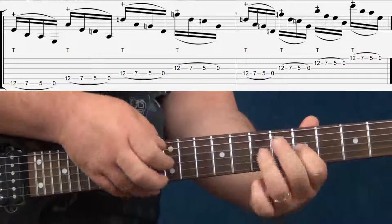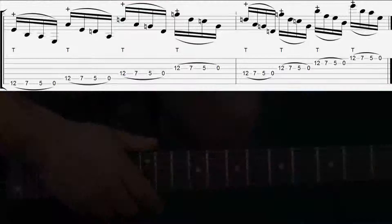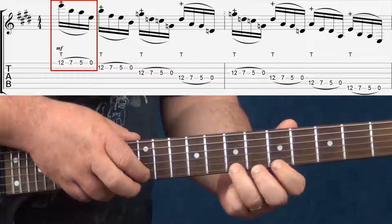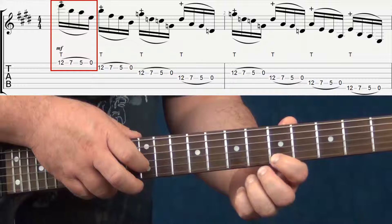Now we'll break it down measure by measure. Start off by placing your index finger on the 12th fret. Next, pull off to the 7th fret, pull off to the 5th fret, and finally pull off to the open string.